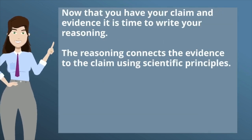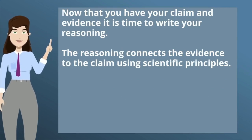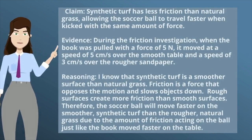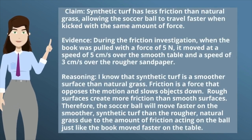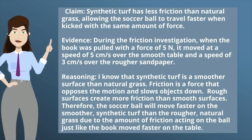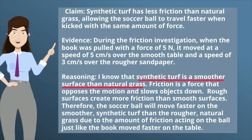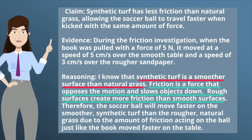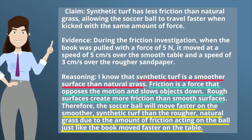Now that you have your claim and evidence, it is time to write your reasoning. The reasoning connects the evidence to the claim using scientific principles. Our reasoning could be: I know that synthetic turf is a smoother surface than natural grass. Friction is a force that opposes the motion and slows objects down. Rough surfaces create more friction than smooth surfaces. Therefore, the soccer ball will move faster on the smoother synthetic turf than on the rougher natural grass, due to the amount of friction acted on the ball, just like the book moved faster on the table. Notice how we identify what we already know about synthetic versus natural grass, the scientific principle of friction is included, and then it links that evidence to the claim.